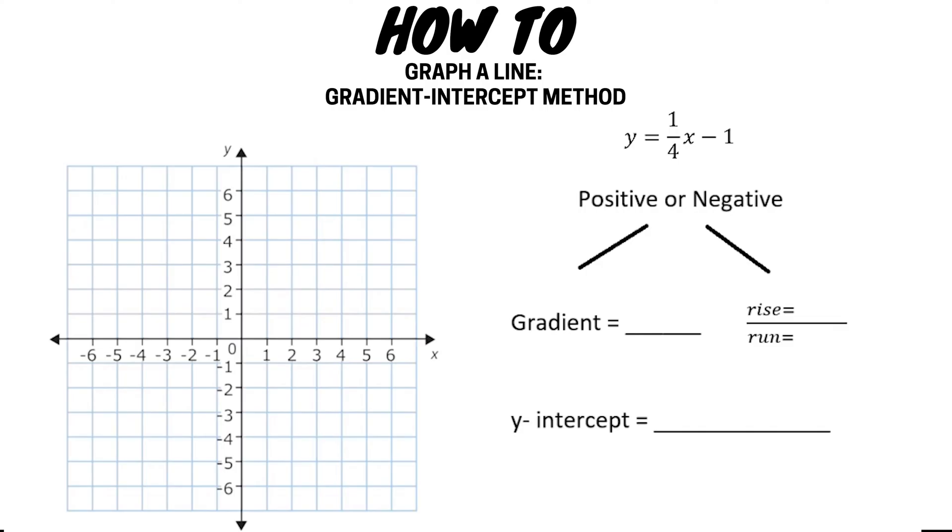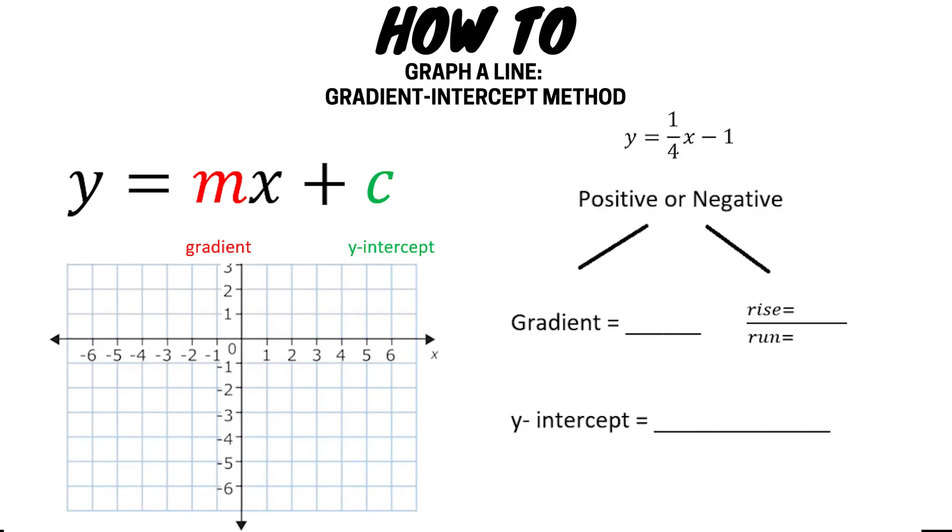This equation is written in the form y equals mx plus c, which we call the gradient intercept form of an equation, as we can easily determine the gradient and the y-intercept of a line when an equation is written in this way.